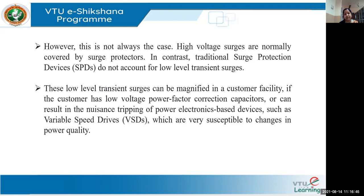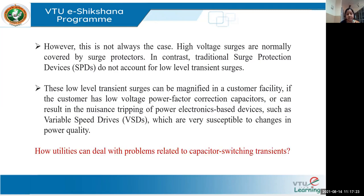These low-level surges can be magnified at the customer end or at the utility end. In the customer facility, if the customer has low-voltage power factor correction capacitors, it can result in unwanted tripping of power electronic devices such as VSDs, which are very susceptible to changes in power quality. We need to ensure that unwanted tripping does not happen in the system due to these surges.